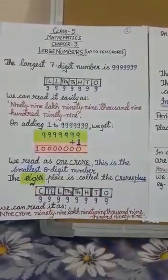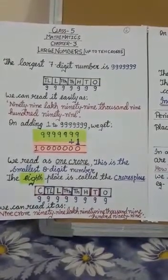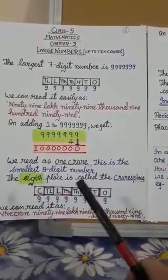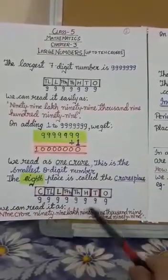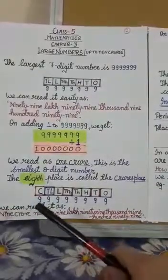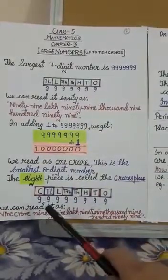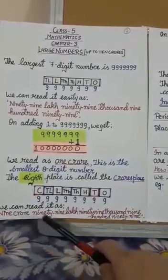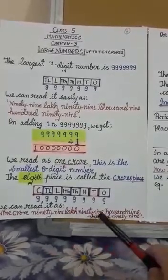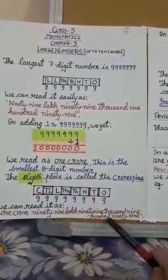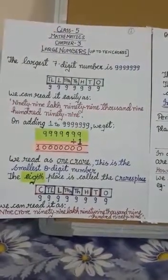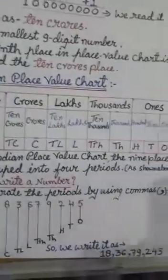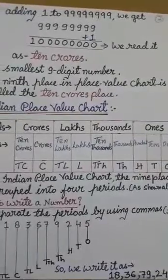The largest eight-digit number has nine repeated eight times. We read it as nine crore ninety-nine lakh ninety-nine thousand nine hundred ninety-nine.